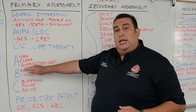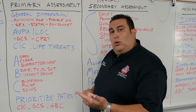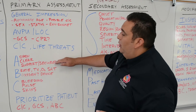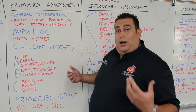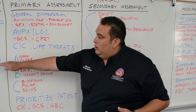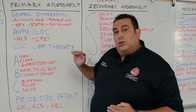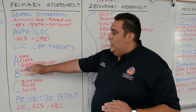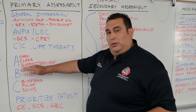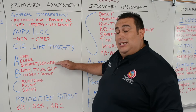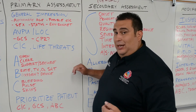Remember, we support an airway with a nasopharyngeal airway or oropharyngeal airway. We secure the airway with a king airway device or an advanced airway by calling for advanced life support resources. A patient can still aspirate if they vomit with an OPA or NPA in place — that's why it's only supporting. Securing means the airway is completely secure; nothing gets in or out besides air.